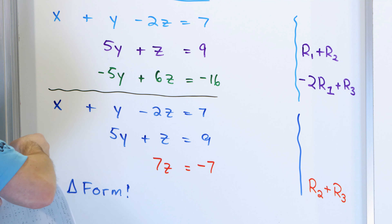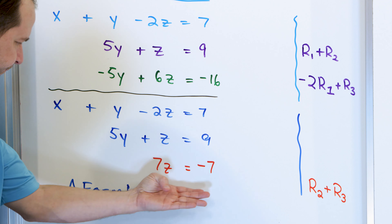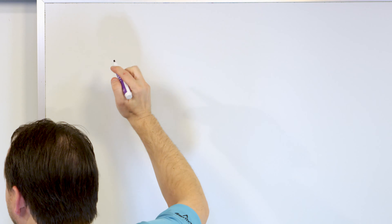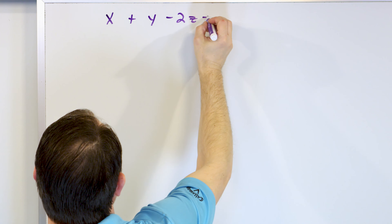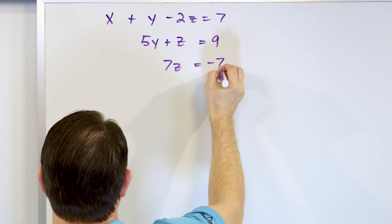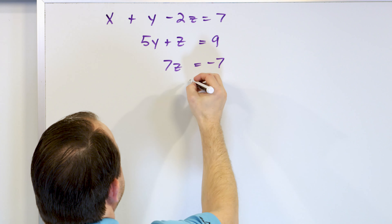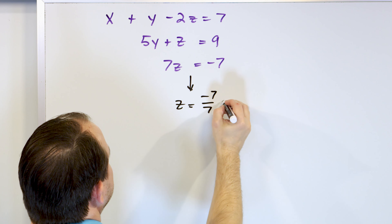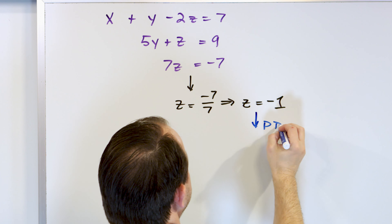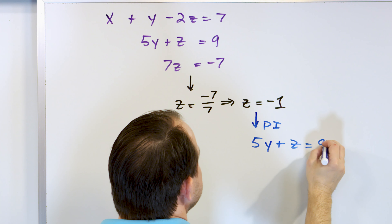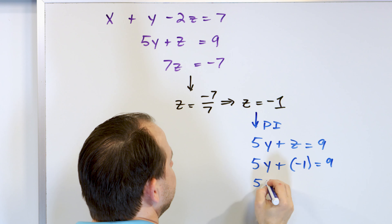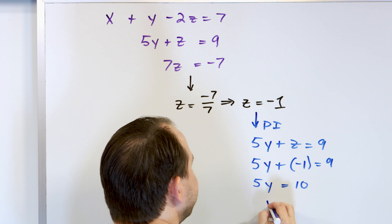If I were to give you this set of equations in triangular form you'd say you know how to solve it. Solve for z from 7z equals negative 7: z equals negative 7 over 7, so z equals negative 1. Take that answer and plug it into the equation directly above: 5y plus z equals 9. Substituting z equals negative 1 gives 5y plus negative 1 equals 9. Add 1 to both sides to get 5y equals 10. Divide by 5 to get y equals 2. Now I have two of the three variables.